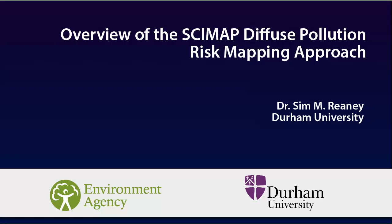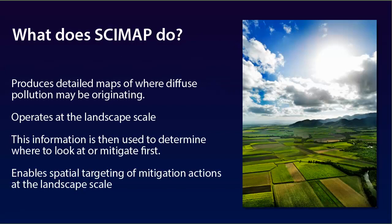This presentation gives an overview of the CIMAP Diffuse Pollution Risk Mapping approach. CIMAP produces detailed maps of where in the landscape diffuse pollution is likely to be originating. It is capable of doing this across a whole range of scales, from small headwaters to large catchments.